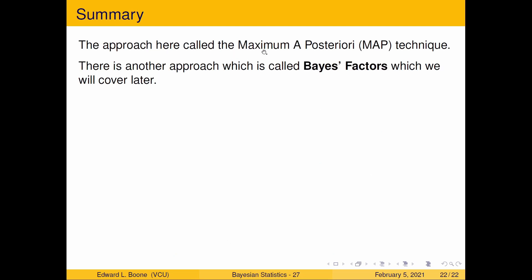The approach here is called Maximum A Posteriori or MAP technique. We're taking the maximum of the posterior probabilities. Another approach is called Bayes factors which we'll cover later. Right now I'm just trying to get you to think differently about hypothesis testing. We're going to talk about how to choose alpha and beta in the next video.